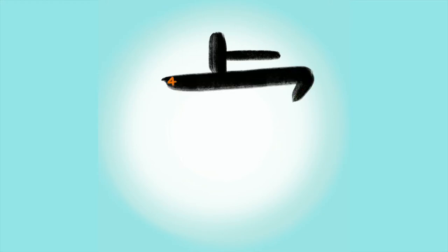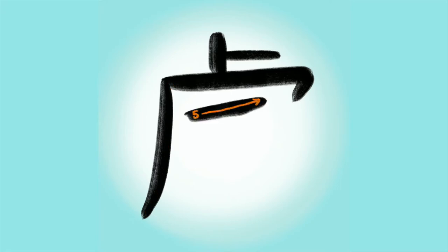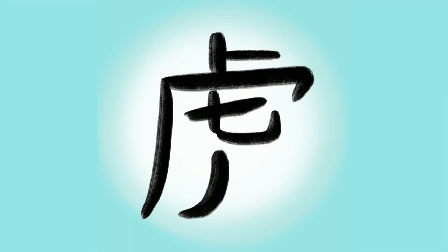符字有八個八話。The 符 character has eight brush strokes. 一, one, 二, two, 三, three, 四, four, 五, five, 六, six, 七, seven, 八, eight.